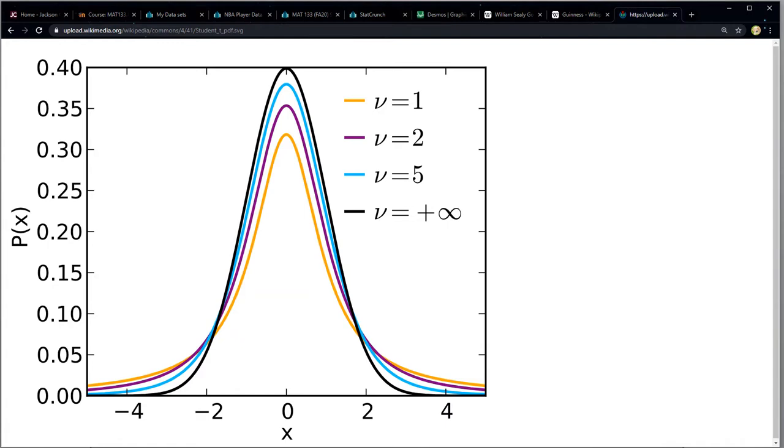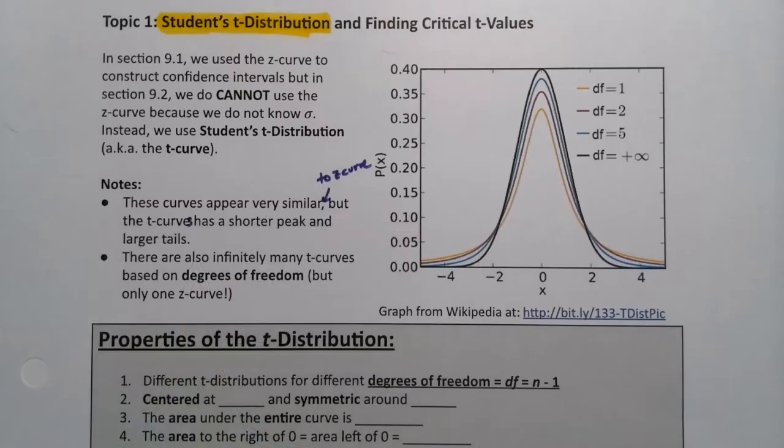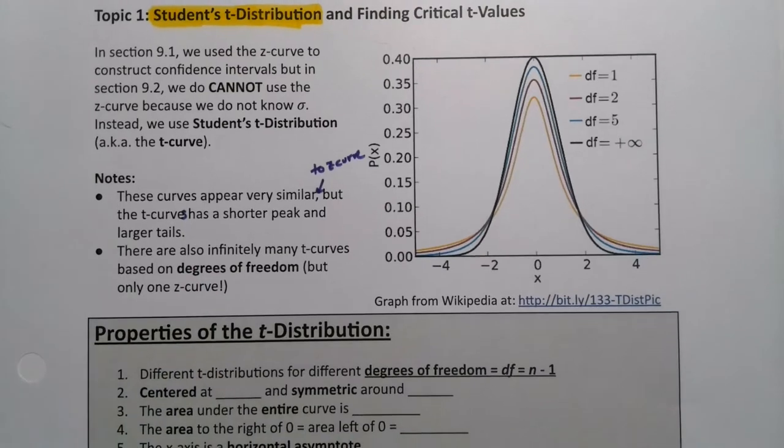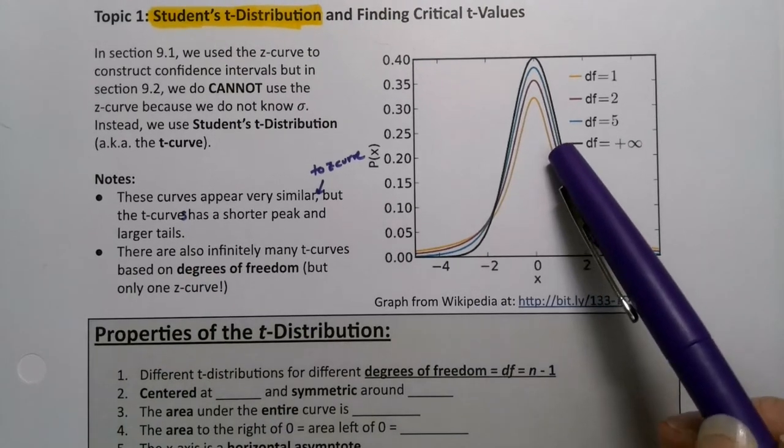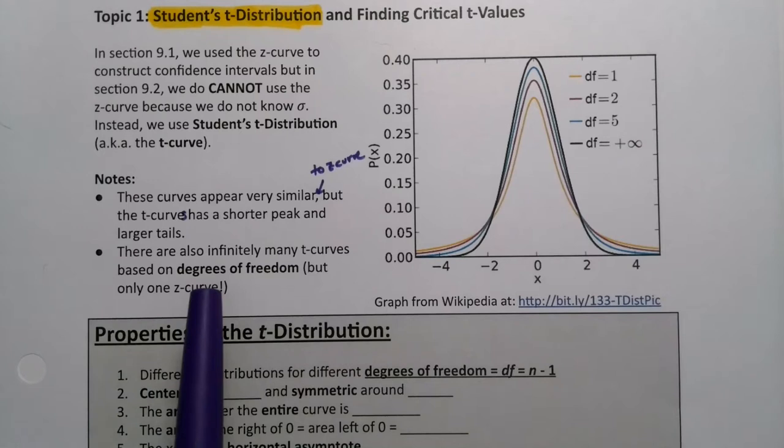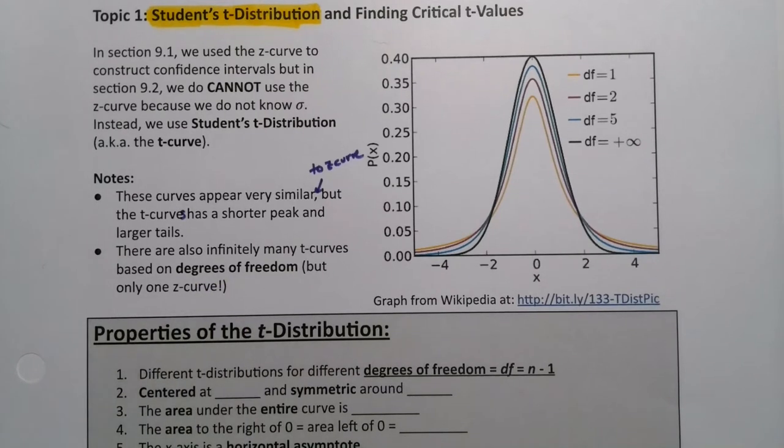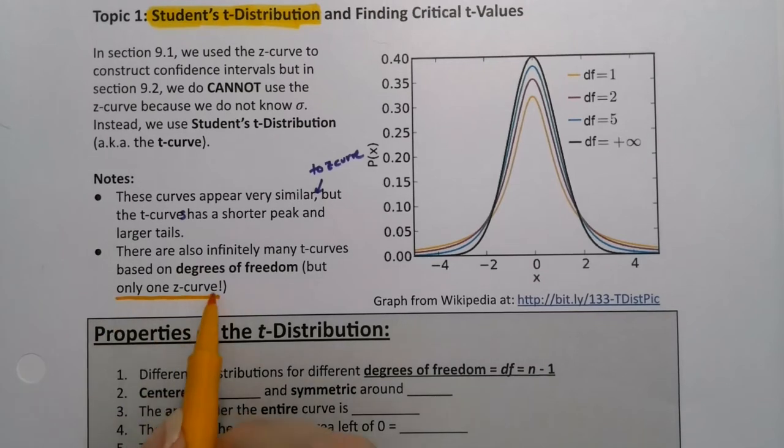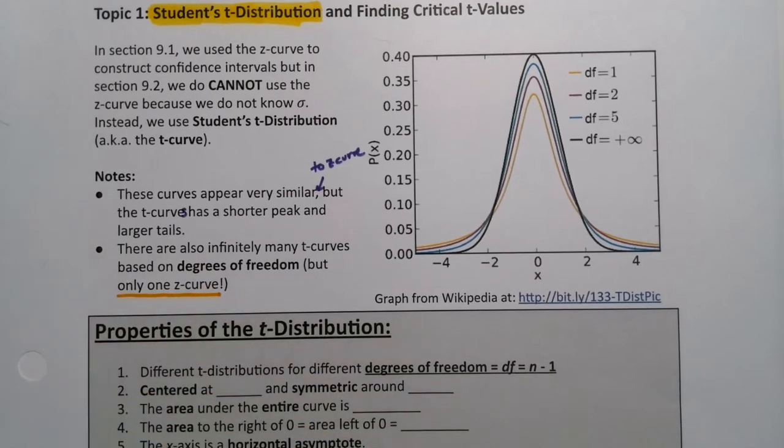We learned that there are infinitely many of these curves based on something called the degrees of freedom. But there's only one z curve, the best. The z curve is the z curve we know and love, there's only one of those. But t curves, there are infinitely many of them.